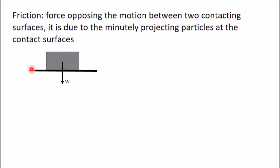Here I have taken one example where a block of weight W is kept on a horizontal plane. In this position there will be no friction force acting between these two bodies, because friction comes into play only when there is any relative motion. So if I apply a force P, this block may tend to move towards the right side.